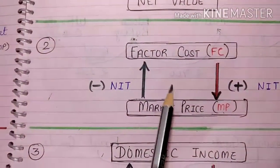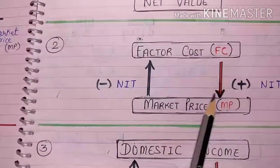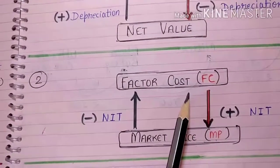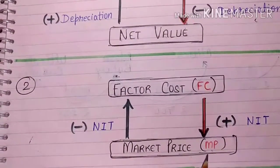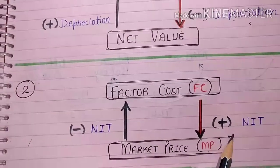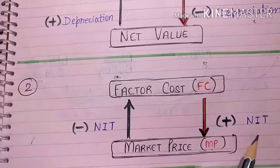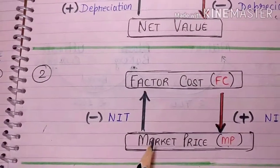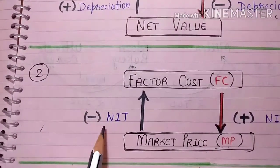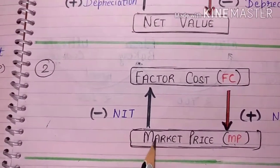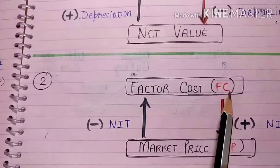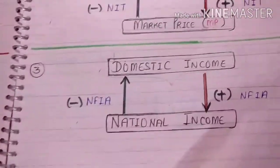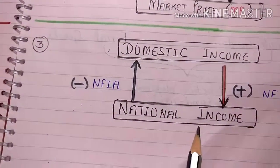The second formula is about factor cost, known as FC, and market price, known as MP. If we are having factor cost and we have to convert into market price, we have to add NIT, which means net indirect tax. In case we are having market price and we have to convert into factor cost, we have to subtract NIT from market price to get factor cost.